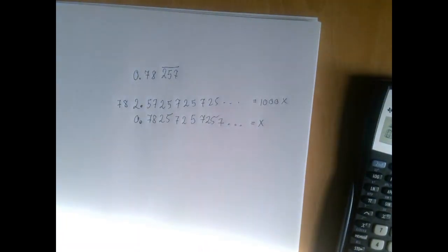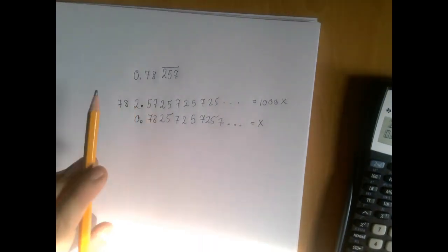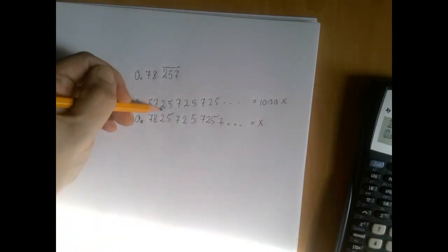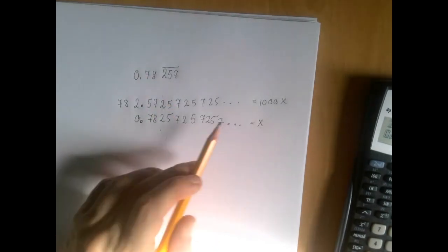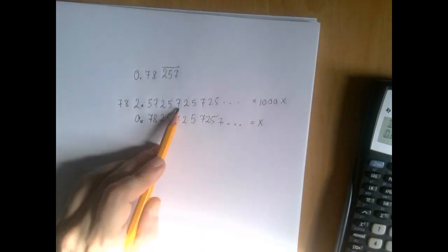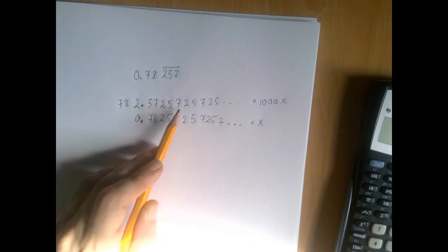This method will only work if, ignoring the finite beginning, the infinite tail, we have this alignment that there is a two above a two, a five above a five, a seven above a seven. And that's why a thousand works because this seven has to move three decimal places to become this seven.